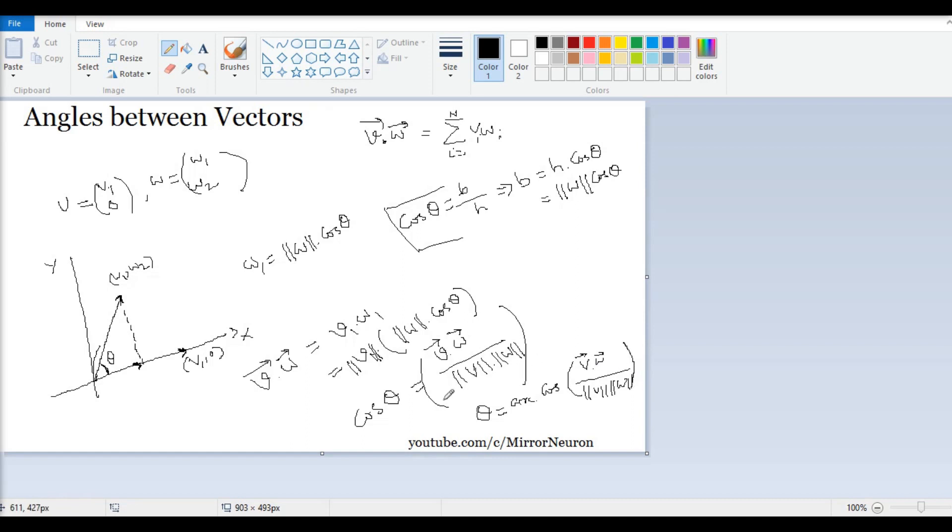That is all we are interested in—to calculate what is the angle between these two vectors. In our next video, we will see that this helps us in calculating the orthogonality of the vectors, which will help us determine whether we should keep a column or not. That is how we can reduce the number of columns which we don't need in our dataset while doing machine learning. I hope you have learned something new today. Have a great day and please subscribe and like our videos.